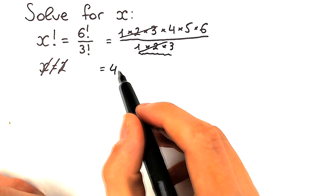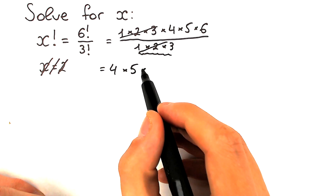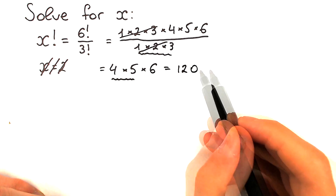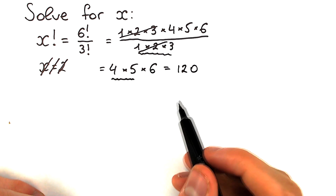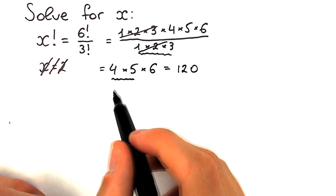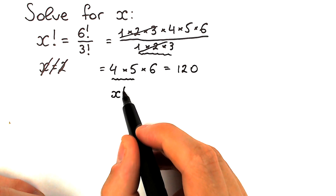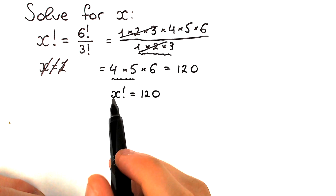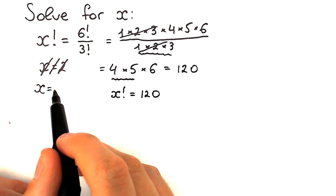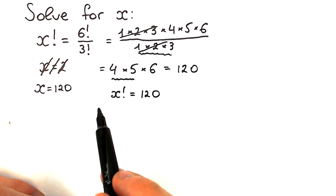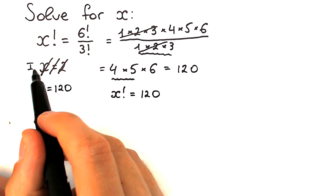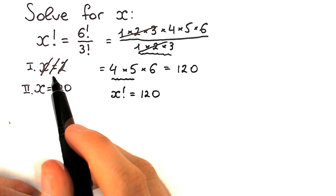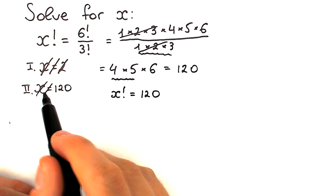After canceling, we still have 4 times 5 times 6, which equals 20 times 6, which equals 120. Now, a second group of students sees that x factorial equals 120 and forgets about the factorial sign, saying the answer is x equals 120. This is the second most common mistake — the first mistake is x equals 2, the second is x equals 120. These are the two most common mistakes.